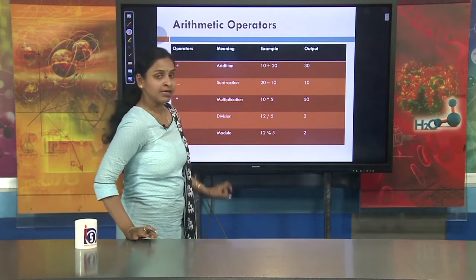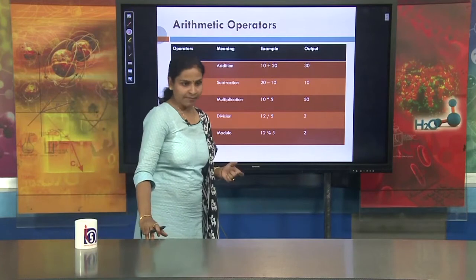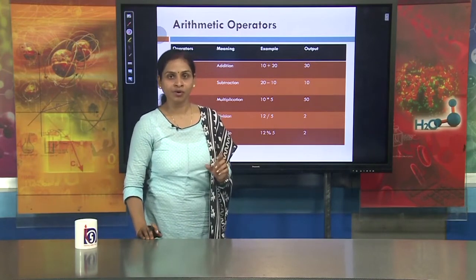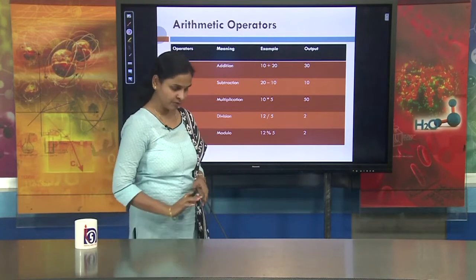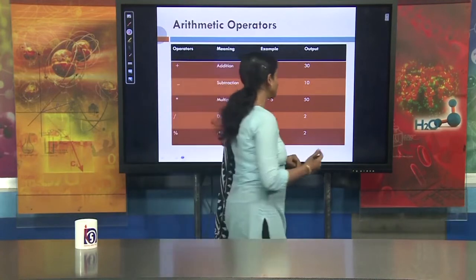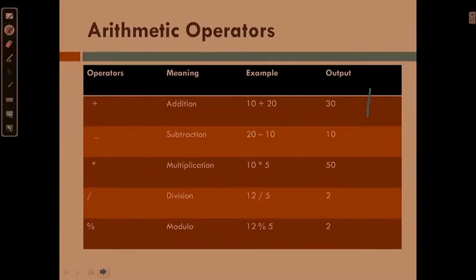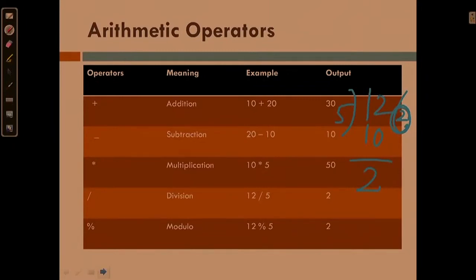There is always confusion between the division operator and the modulo division operator. When you want to get the quotient of a division you have to use the division operator. If you want to get the remainder of a division you have to use the modulo division operator. For example, 12 divided by 5: 5 goes into 12 twice with remainder 2. If we use the division operator, the output will be the quotient — which is 2. If we use the modulo division operator, the output will be the remainder.